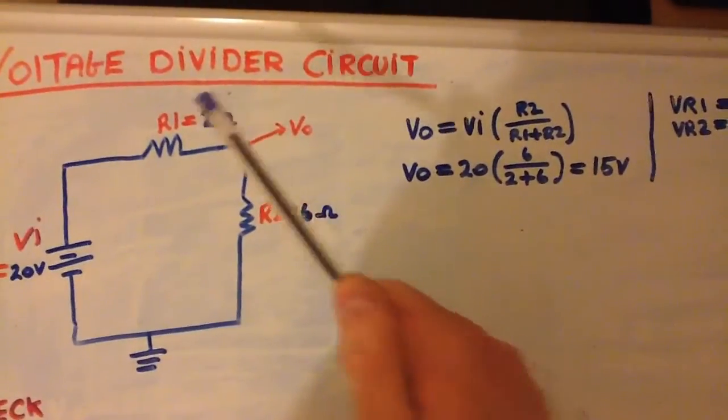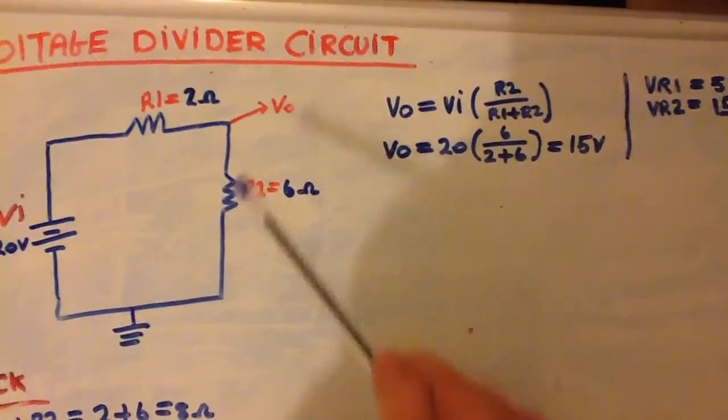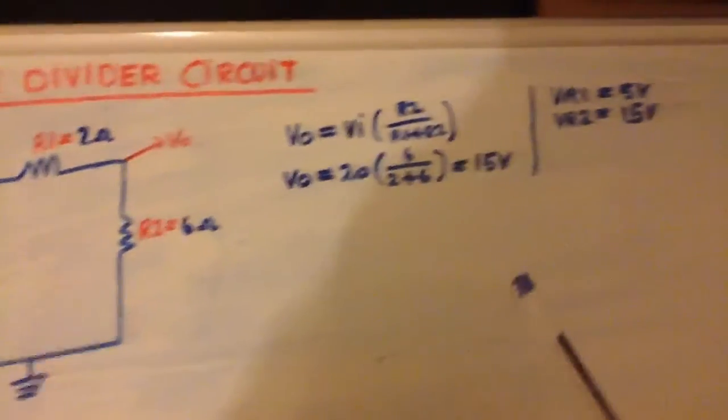we could therefore say that the voltage drop across R1 will have to be 5 volts, and the voltage drop across R2 is 15 volts.